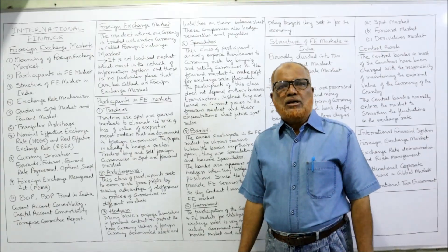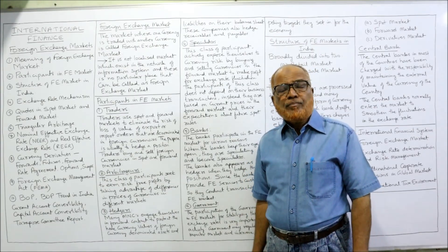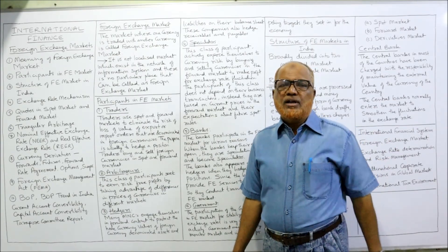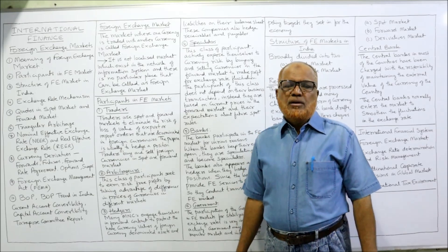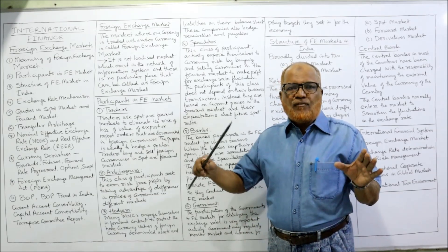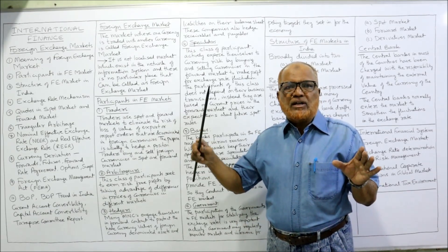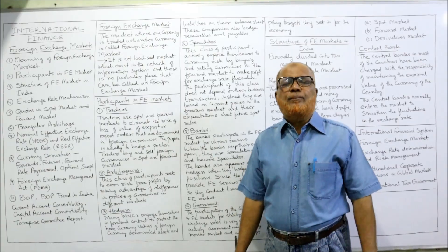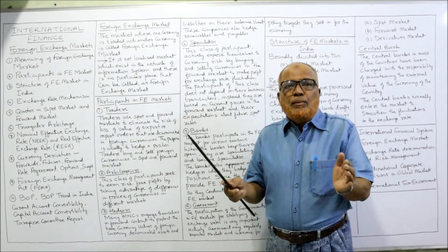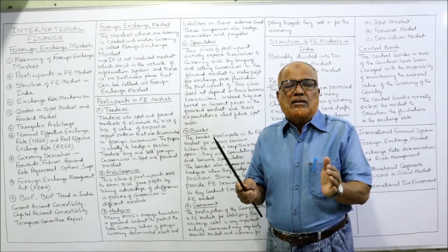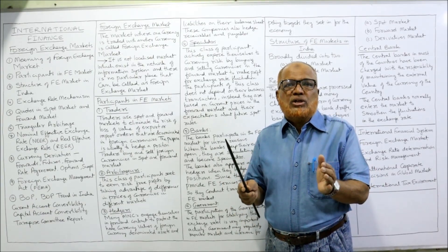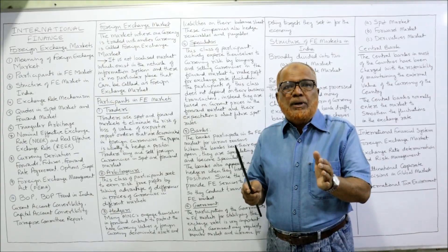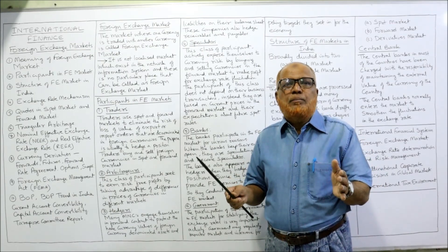Hedging means protecting the business against fluctuations in the foreign exchange rate. For example, a multinational corporation (MNC) is exposed to foreign exchange risk because when the exchange rate fluctuates, it affects the company's profit or loss. So they hedge — they protect their business by entering into the foreign exchange market. These participants are called hedgers.